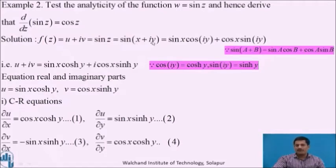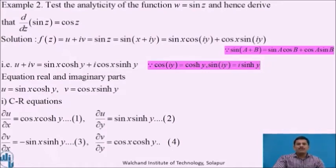Using the trigonometric identity sin(a + b) = sin a cos b + cos a sin b, sin(x + iy) reduces to sin x · cos(iy) + cos x · sin(iy). Using the relation between trigonometric and hyperbolic functions, cos(iy) = cosh y and sin(iy) = i sinh y, so we get u + iv = sin x · cosh y + i cos x · sinh y.